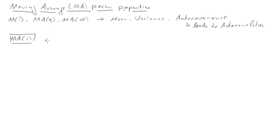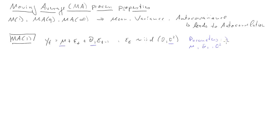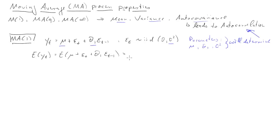We're going to start with an MA1 process. We assume that the error terms epsilon_t are IID distributed with zero mean and variance sigma squared. The parameters are mu, theta_1, and sigma squared, and these parameters — together with the fact that it's an MA1 — will determine all the properties of the MA process: the mean, variance, and autocovariances. The expected value of Y_t equals mu, since the expected value of a sum equals the sum of expected values, and the expected values of the epsilons are zero.